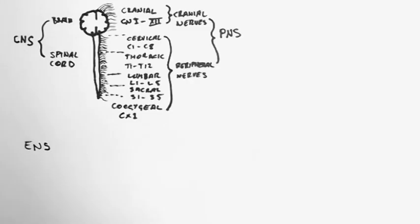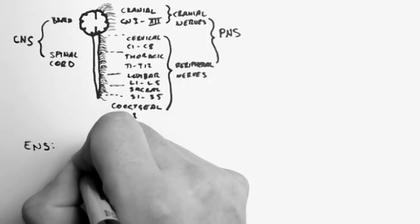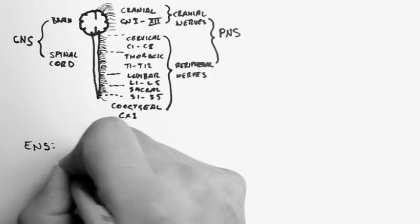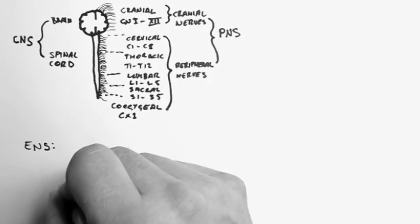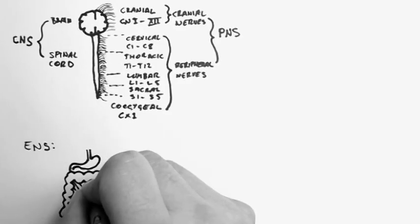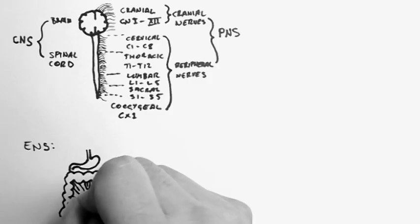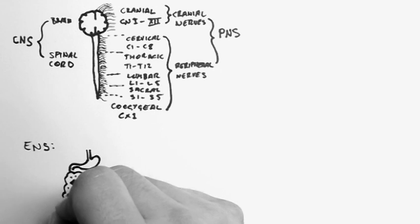Now there's one more division, and some people call this a functional or an anatomical division. But here I've displayed it as an anatomical division. It's the enteric nervous system. So this is the nervous system of the digestive tract. So the digestive tract has its own nervous system, which allows it to function even if it's removed from the body.